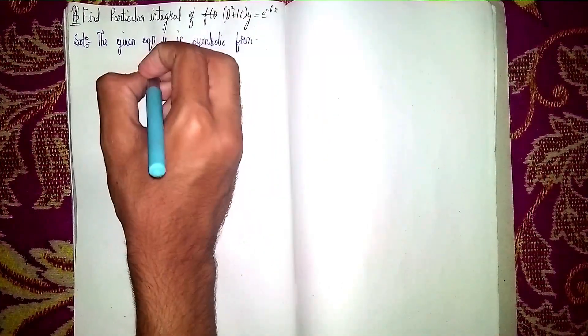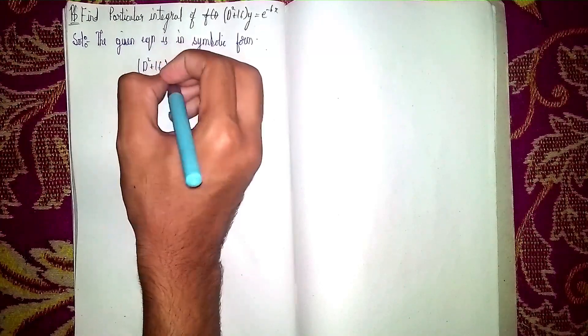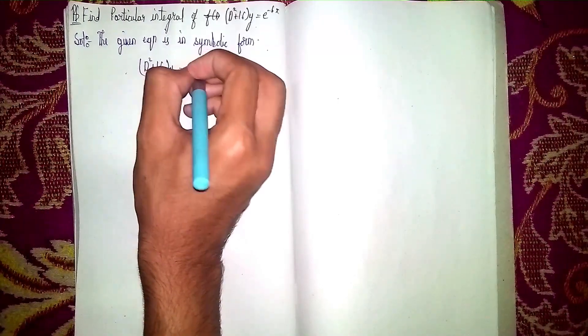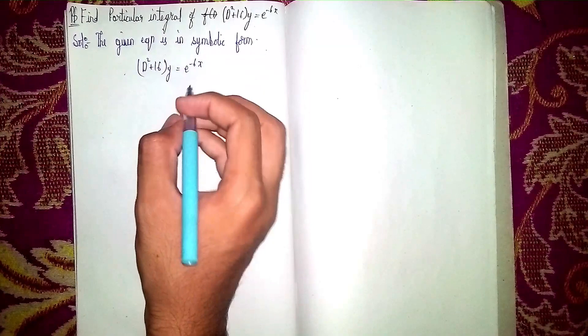(D² + 16)y = e^(-6x). Now understand what this is.